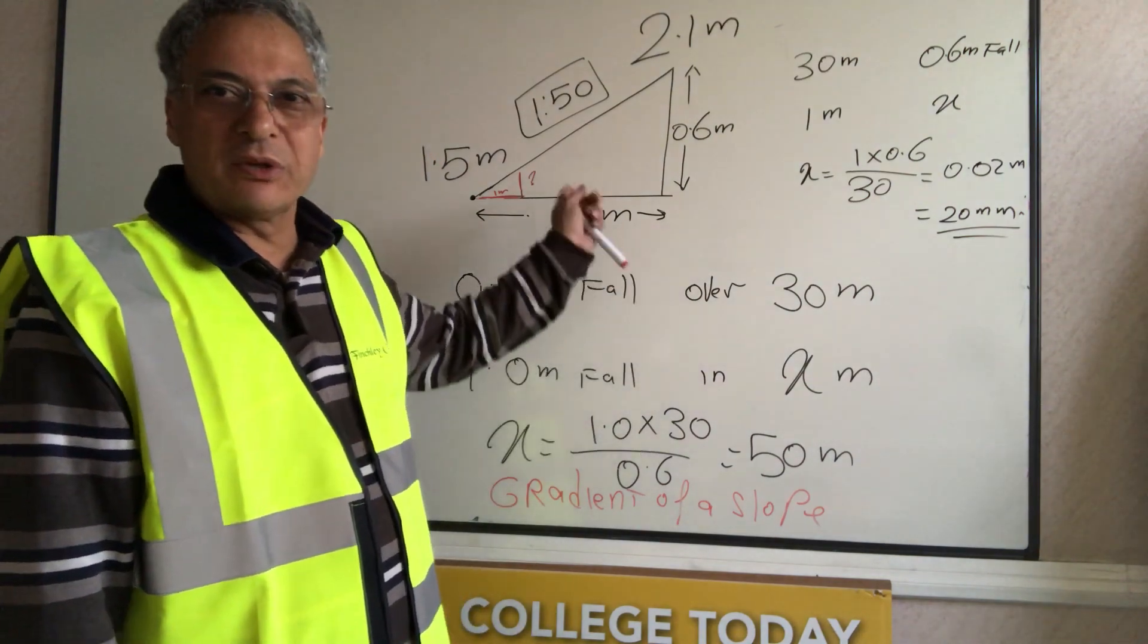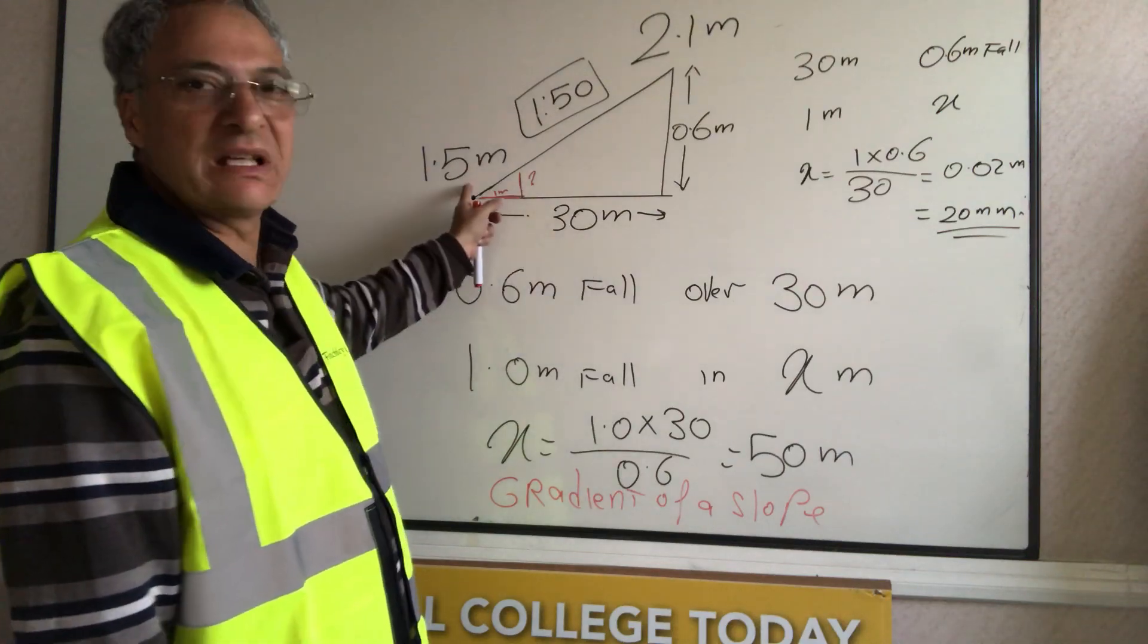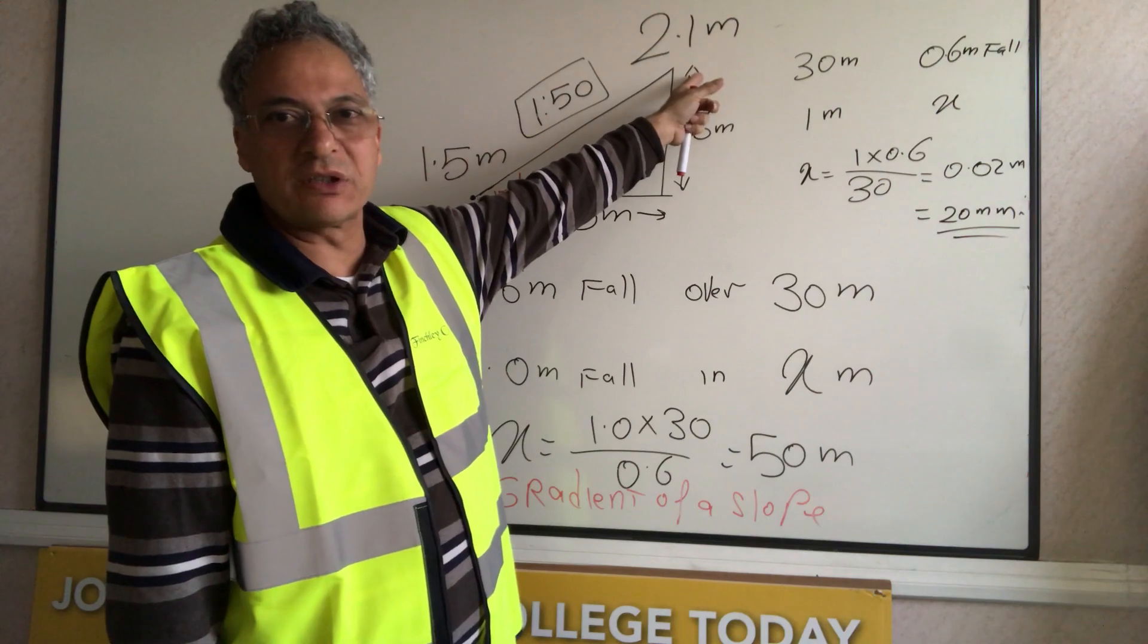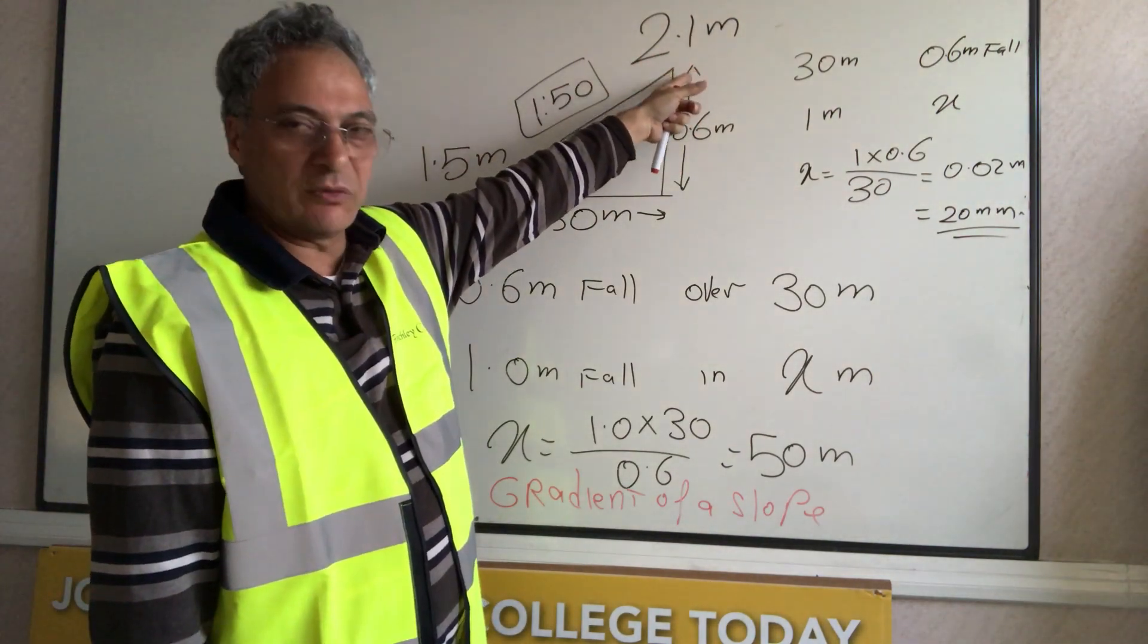For example, you have a ramp over a long distance of say 30 meters length. We have a level at the beginning and start of the ramp, we have a level at the top of the ramp, so it's 1.5 meters and 2.1 meters.